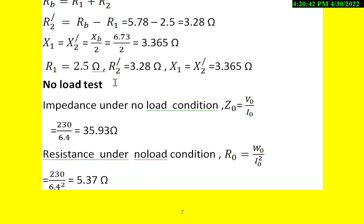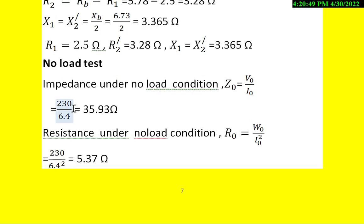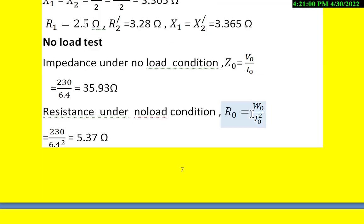From the no-load test, we know Z0 = V0/I0. V0 = 230V and I0 = 6.4A. Therefore, Z0 = 230/6.4 = 35.93Ω.